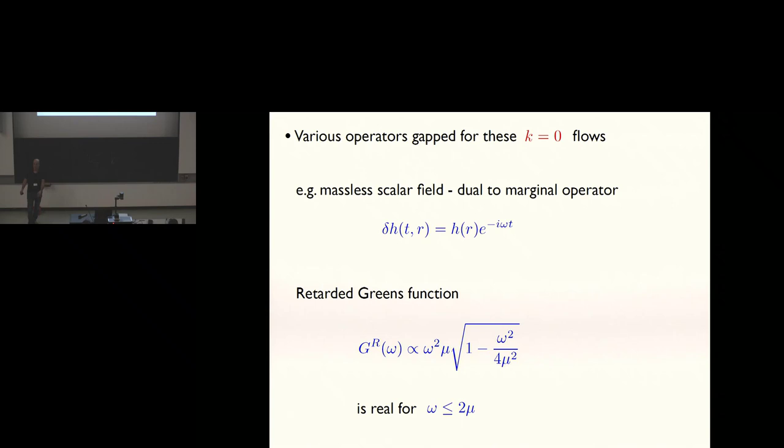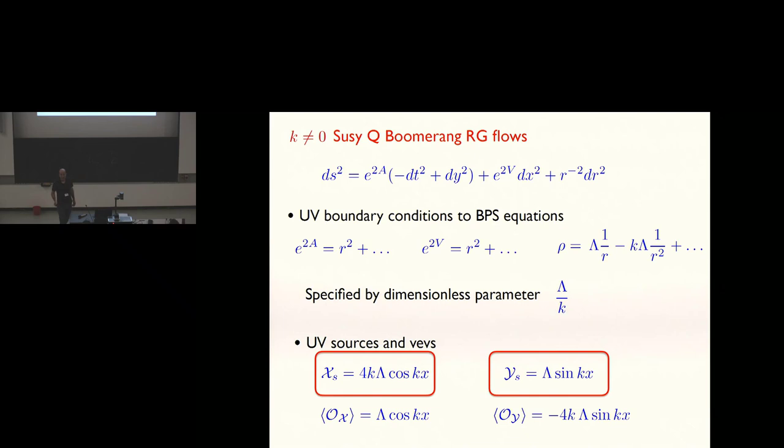Let's now switch on k non-zero and look at the boomerang flows. We have those BPS equations. If you start solving them perturbatively, you want to go to AdS at the boundary in the UV. Because we're looking at BPS equations, it turns out the leading and the sub-leading pieces of the modulus of the scalar field are correlated. In fact, the full solutions are specified by a dimensionless parameter lambda over k. That point is going to be important in a second.